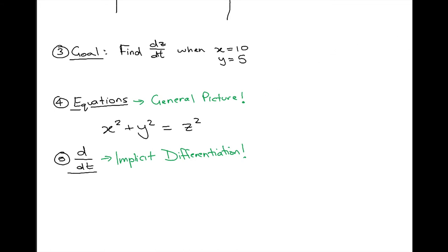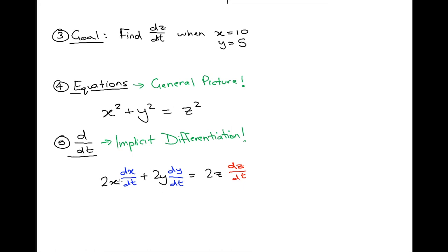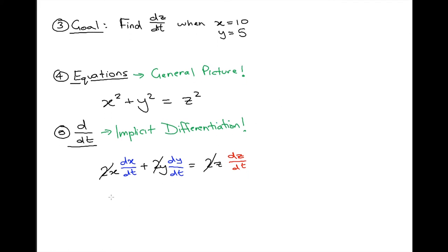The math associated with related rates is generally not as messy as it can get with optimization, but it is a little more advanced — you do need to know implicit differentiation. So let's do that. The derivative of x² with respect to t gives us 2x · (dx/dt). Then we have 2y · (dy/dt). All this equals 2z · (dz/dt), which is the quantity we're really interested in. We can cancel the 2s and rewrite the equation as: x(dx/dt) + y(dy/dt) = z(dz/dt).